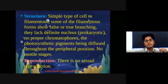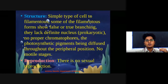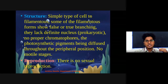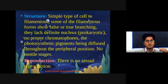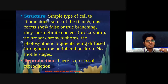The structure is usually very simple — unicellular or filamentous. Some members form false branching of these filaments. They do not have a complete nucleus; they are prokaryotic in nature. There are no proper chromatophores, and photosynthetic pigments are distributed in the cytoplasm, particularly in the peripheral region at the ends. There are no motile stages.